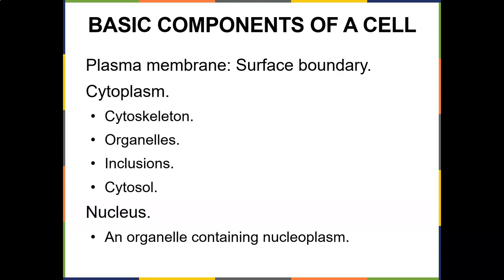If certain things come to the surface, the membrane checks credentials. Sodium, potassium, chloride, water — they can go in and out, no cover charge. But bacteria and viruses are smart — they'll find a fake ID and disguise themselves as something else, trying to sneak into the cell. Bacteria and viruses like to sneak into cells and cause damage.